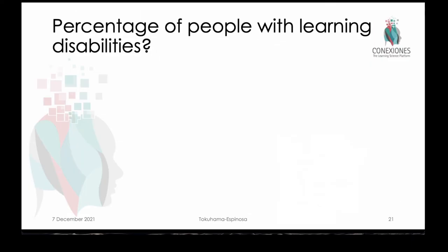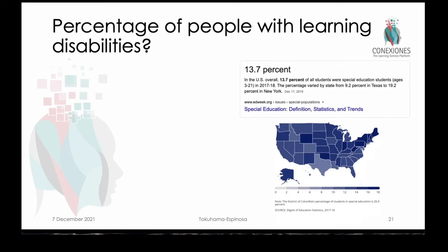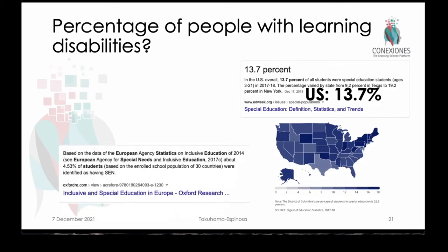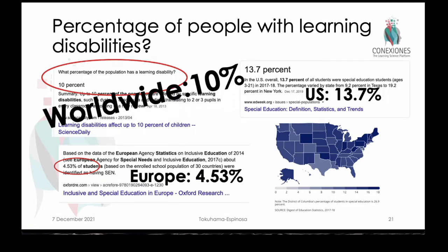Parenthetically, one of the reasons Bloom said 90% of people in your classroom can do this has a lot to do with general intelligence. In the United States, about 13.7% of people have a learning difficulty — we are pretty over the top in diagnosis. In Europe, it's only 4.53%, and global international studies say about 10% of the population has a specific learning disability that will prevent them from actually learning what's on our curriculum agenda. So basically 90% of the people in your class can get it if and when they have the right amount of time to fill in their prerequisite needs.